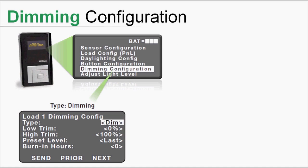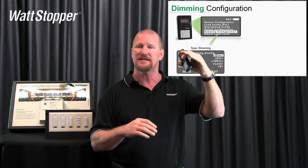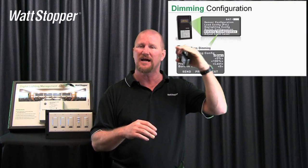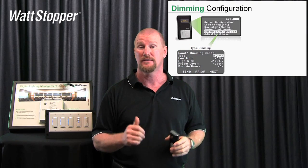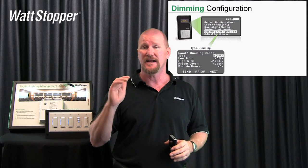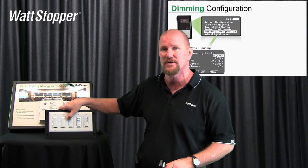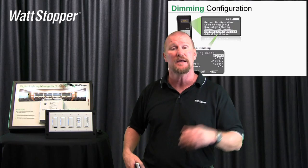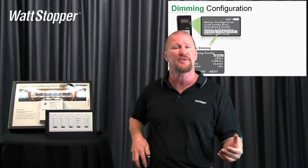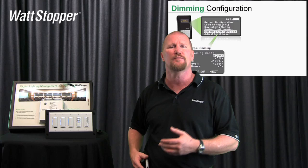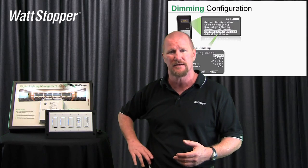So what can we change in dimming configuration? You can see here we can change low trim and high trim — these are hard limits. If I set a high trim, this is the highest level the system will allow. If you set it at 80%, you get 80%. I don't care how long you press and hold this dimmer, you're going to be capped at 80%. It's a powerful feature, but it can also be a feature I would exercise caution when using.